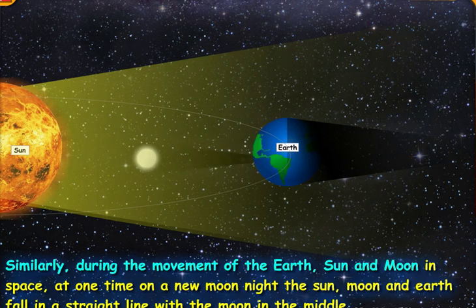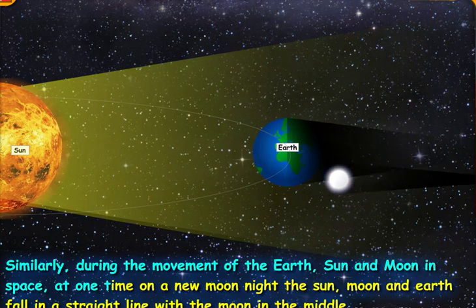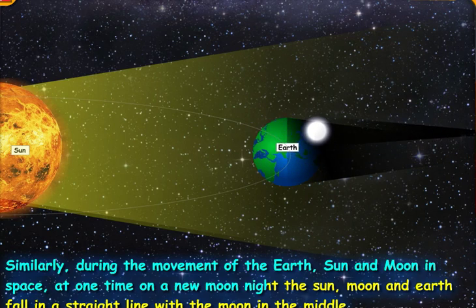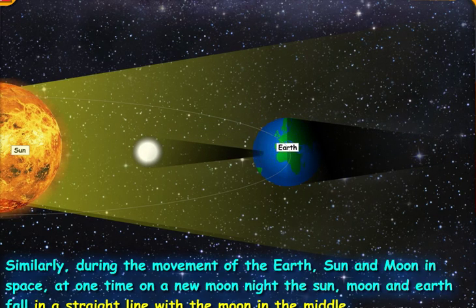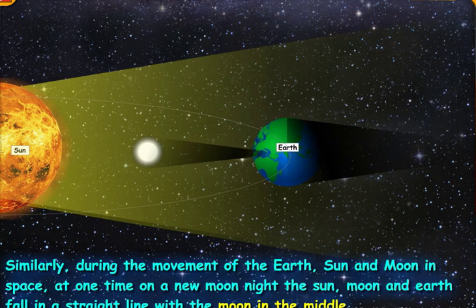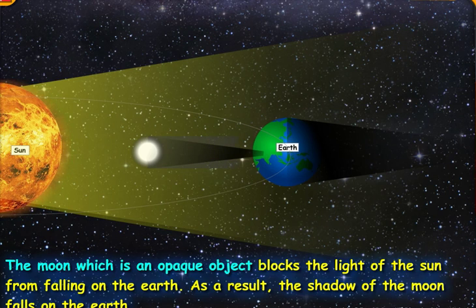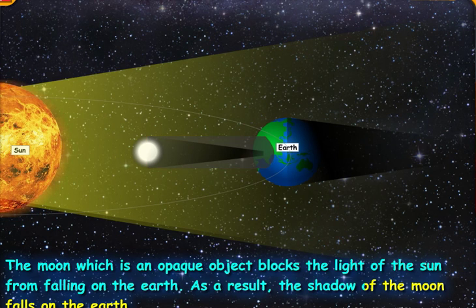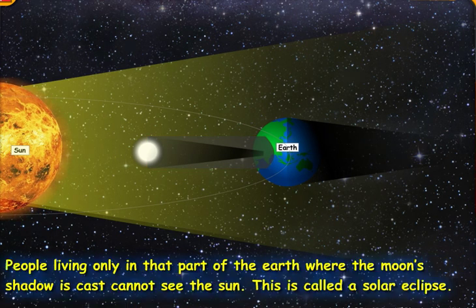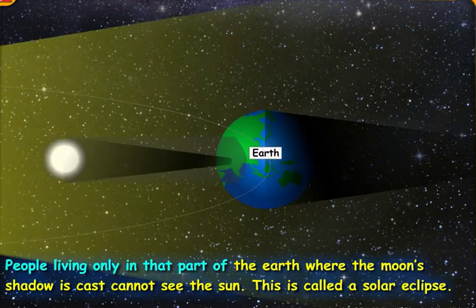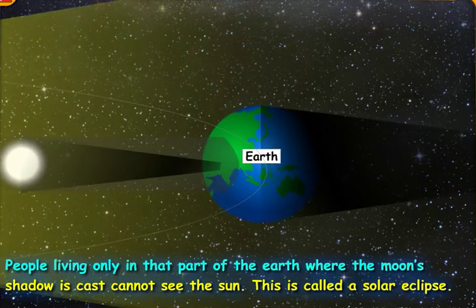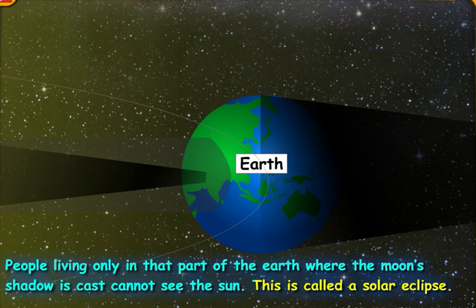Similarly, during the movement of the earth, sun, and moon in space, at one time, on a new moon night, the sun, moon, and earth fall in a straight line with the moon in the middle. The moon, which is an opaque object, blocks the light of the sun from falling on the earth. As a result, the shadow of the moon falls on the earth. People living only in that part of the earth where the moon's shadow is caused cannot see the sun. This is called solar eclipse.